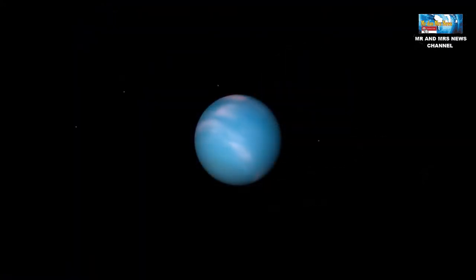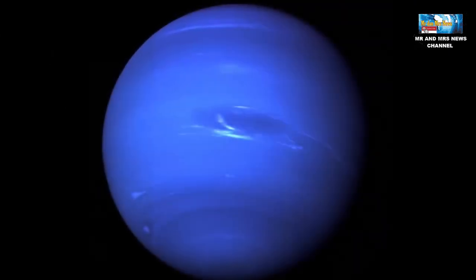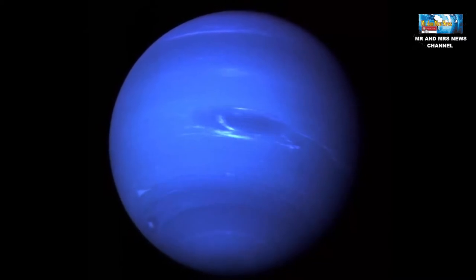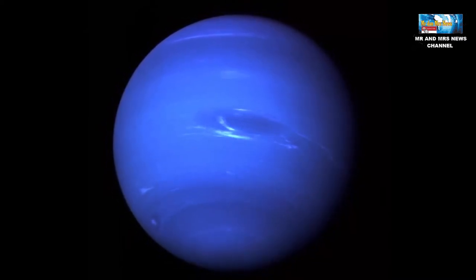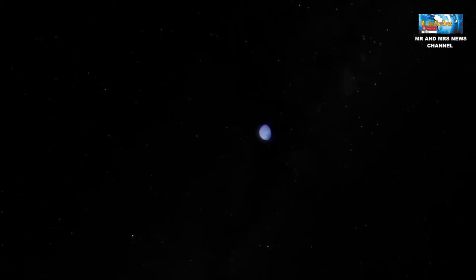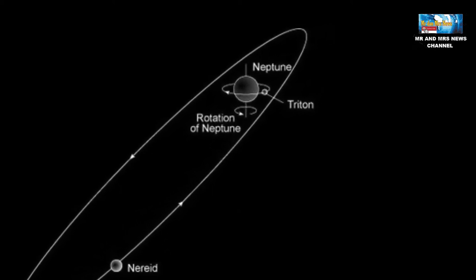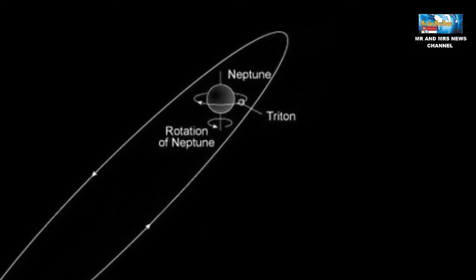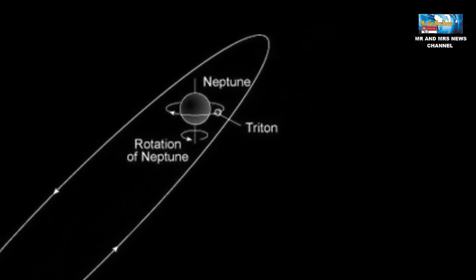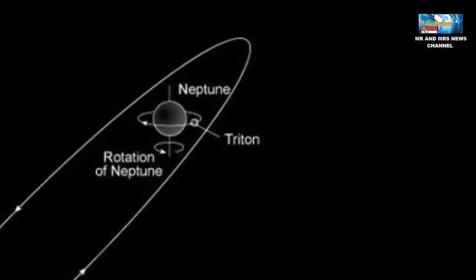Neptunus is the second planet with the strongest gravitational pull after Jupiter. As a result, this planet often causes problems for celestial bodies around it. This planet often disrupts Uranus's orbit by pulling Uranus closer to it. Not only that, Neptunus also pulls one of its natural satellites, Triton, closer to it. Because of this, Neptunus is nicknamed the troublemaker.